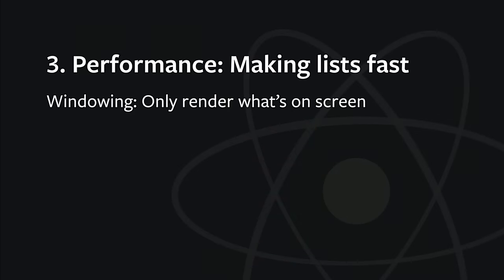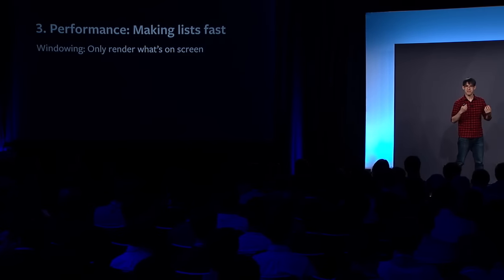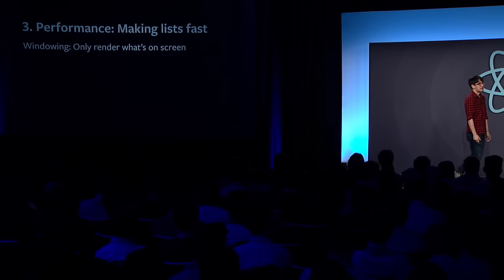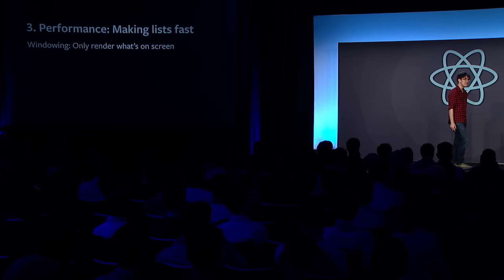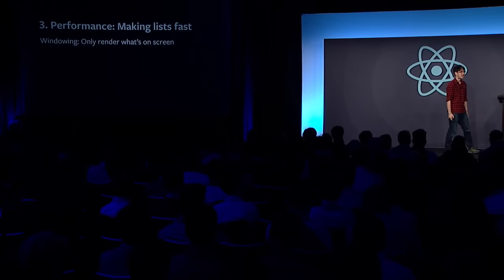The first technique we call windowing — only rendering the things that are on screen. It sounds obvious: why waste time rendering things below the fold? But this isn't super easy in the React model right now — you sort of have to step outside of it. We have some abstractions for this, but they're not as performant as they could be.